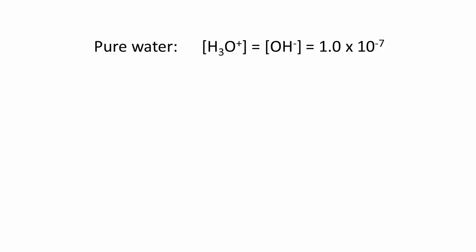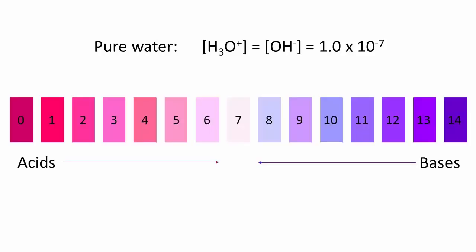To measure the acidity of a solution, we use the pH scale. The pH is simply the negative base ten logarithm of the hydronium, or H plus, concentration.